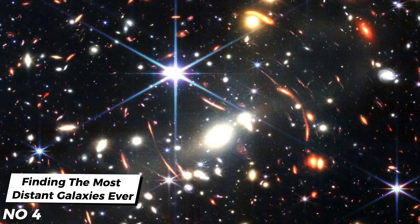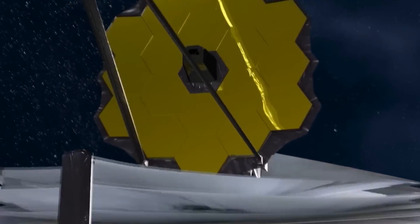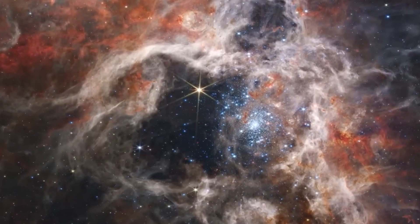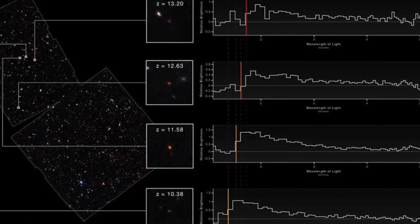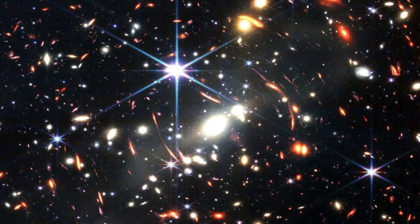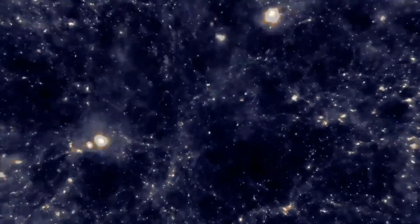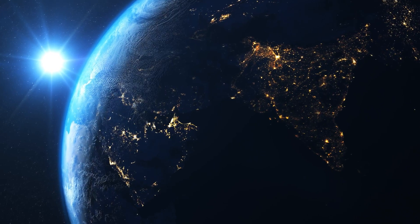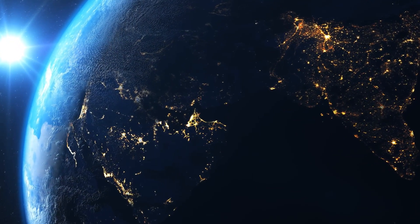Number 4: Finding the Most Distant Galaxies Ever. Webb was designed for viewing the universe's most distant galaxies. In mid-December, scientists announced that they had successfully done so. The telescope has officially observed the four most distant galaxies known, meaning they are also the oldest. Webb observed the galaxies as they first emerged some 13.4 billion years ago. The universe was just 350 million years old, almost 2% of its present age.